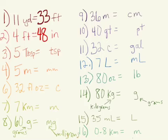For number three, five tablespoons is equal to how many teaspoons? There are three teaspoons in every tablespoon. So we have five groups of three or five times three is fifteen.